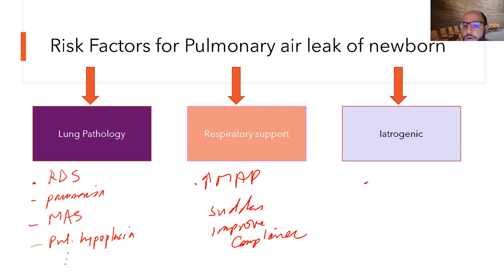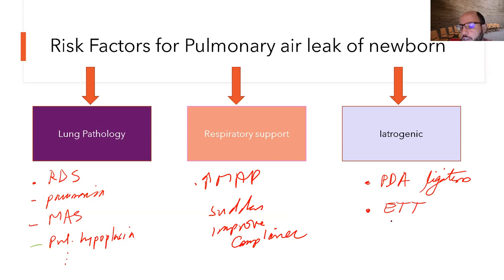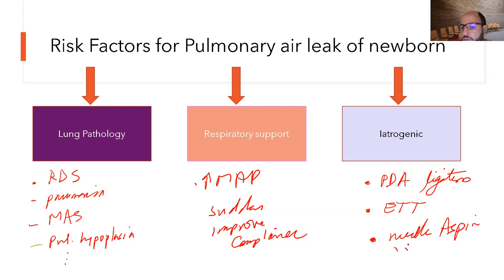Iatrogenic causes include PDA ligation, especially with the older traditional approach. Intubation carries risk — especially if you use a stylet — for tracheal perforation, or bronchial perforation if the tube is too deep. Needle aspiration and any procedures involving big line placement or external procedures also carry risk.